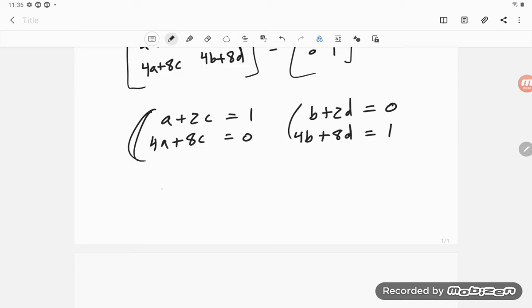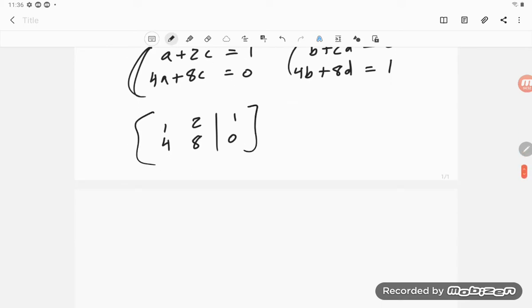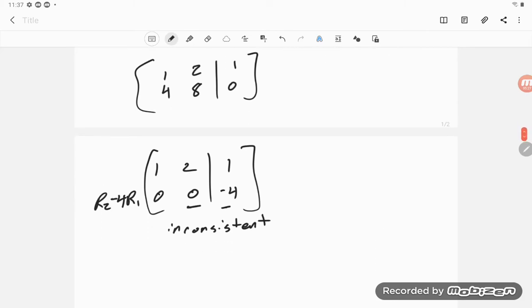So I have 1 2 1 and 4 8 0, there is my system. And now if I have my 1 2 1 and take row 2 minus 4 of row 1 and put that back into row 2, I get 0 0 and negative 4.